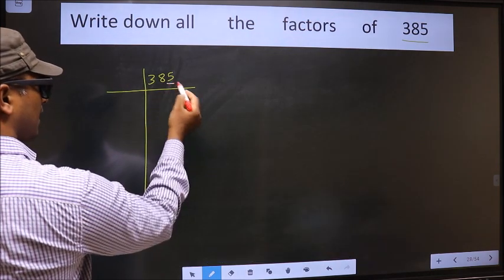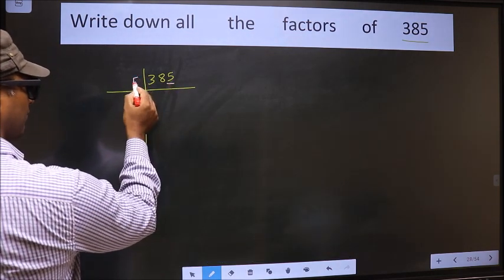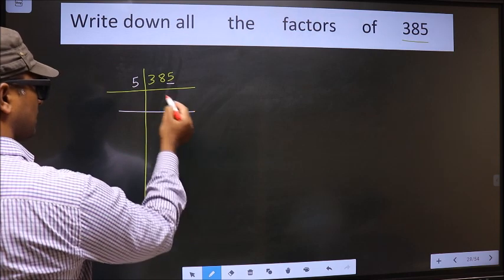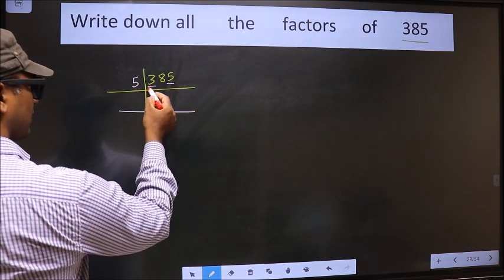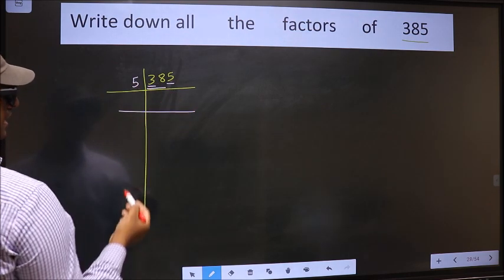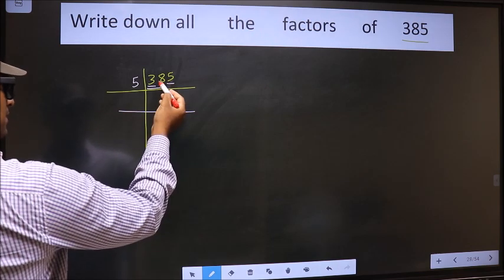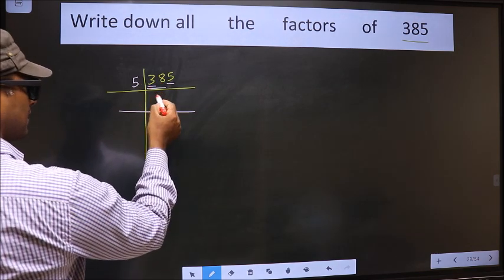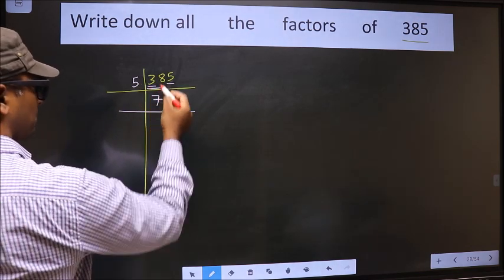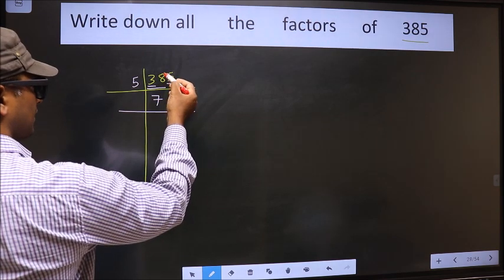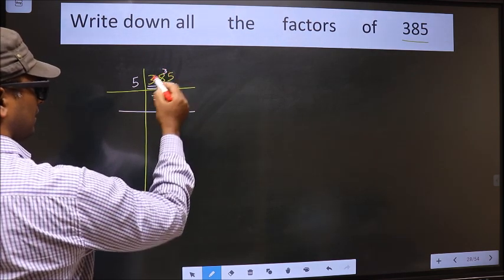For this number, the last digit is 5, so we take 5 here. The first number, 3, is smaller than 5, so we take two numbers, that is 38. A number close to 38 in the 5 table is 5 times 7 equals 35. 38 minus 35 is 3, carried forward making it 35.